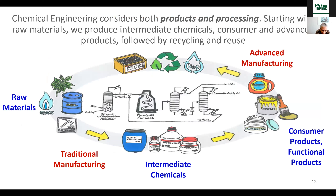In chemical, biochemical, and related engineering, both products and processing start with raw materials. Traditional manufacturing gives us intermediate or bulk chemicals — single-species products. These are then combined to make consumer products and functional products. After use, it has become important to reuse, so advanced manufacturing is needed to recover raw materials for recycling. This is a question of sustainability and circular economy. What is possible is a sustainable circular economy, because ultimately the amount we can recycle will keep decreasing.